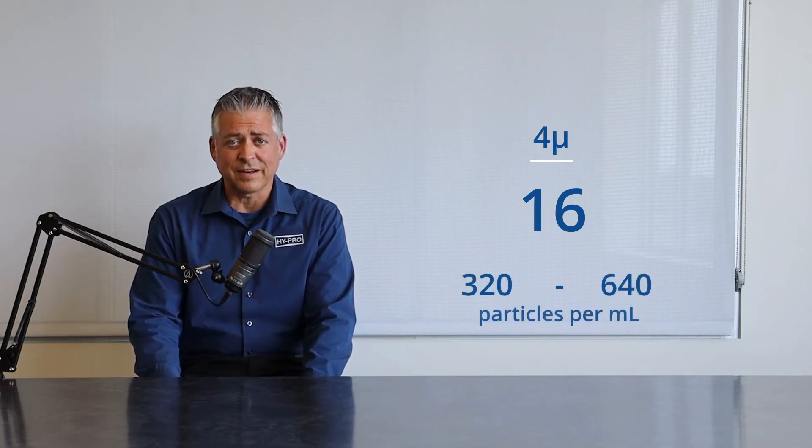Make sure that when you look at these reports you also pay attention to the actual particle count in each range. Let's pick on an ISO code of 16, 14, 11. The 16 would be the 4 micron and larger channel.